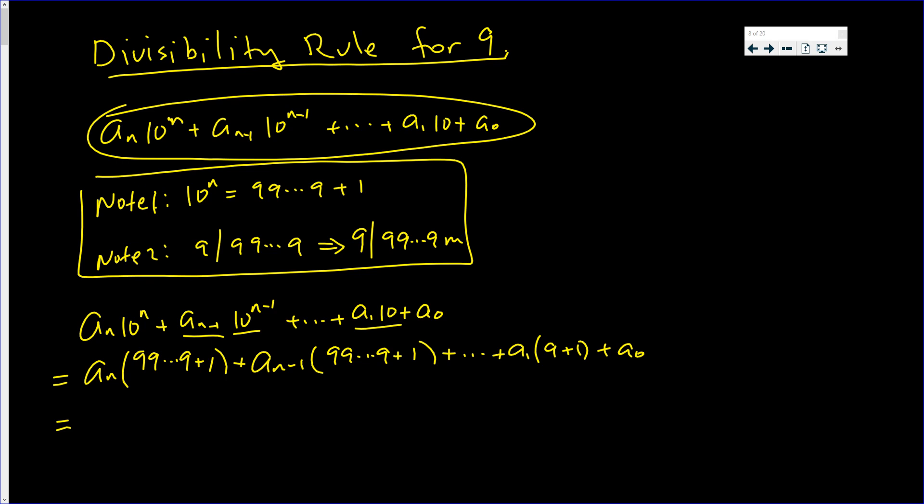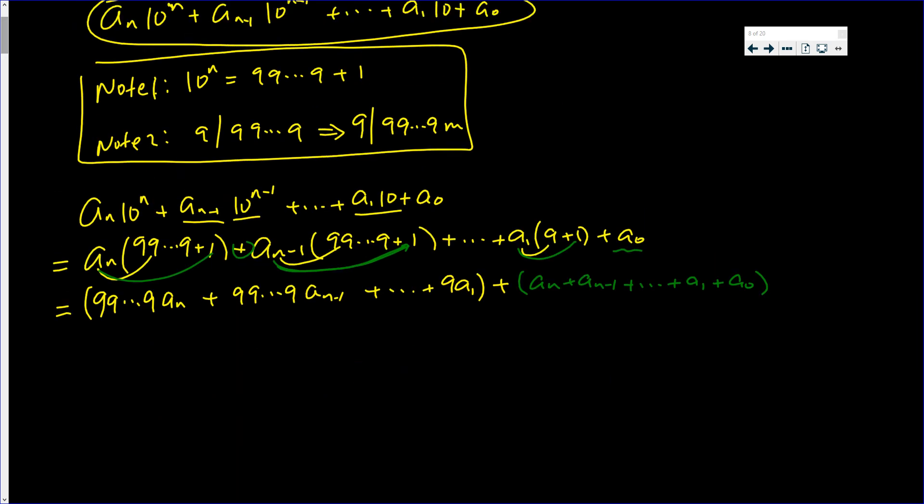Now let's distribute, but let's not distribute to the 1's yet. You get a string of 9's times a_n plus a string of 9's times a_(n-1), all the way down to a string of just one 9 times a_1. Well let's add on the rest. So you have a_n times 1 which is a_n, plus a_(n-1) times 1 is a_(n-1), all the way down to a_1 times 1 which is a_1 plus a_0.